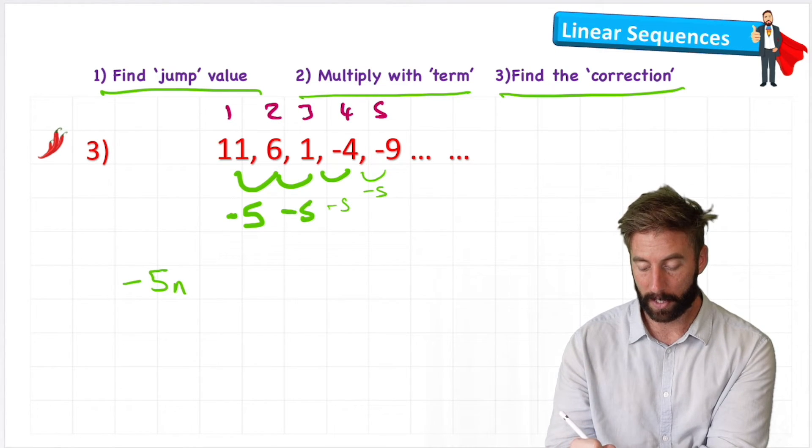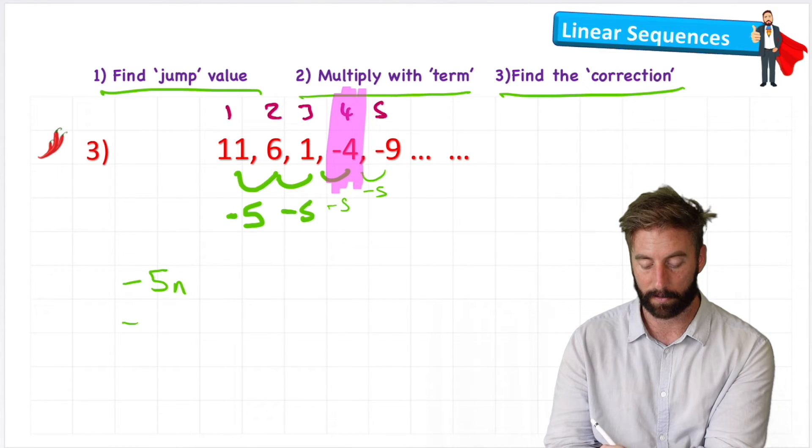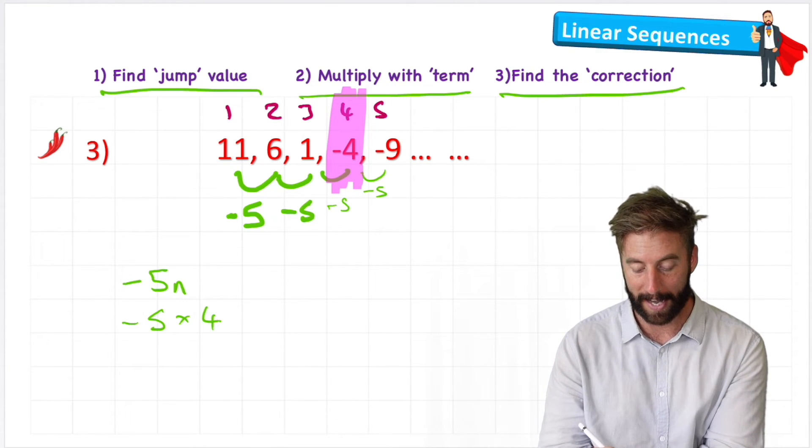And we can just pick any example. Let's pick number 4, the fourth term. Negative 5 times 4. Well, negative 5 times 4 becomes negative 20.